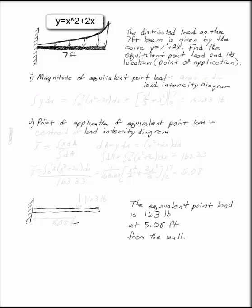The distributed load on the 7-foot beam is given by the curve y equals x squared plus 2x. I want to know what the equivalent point load is and where the point of application is. I know that the magnitude of the equivalent point load is always the area under the load intensity diagram.